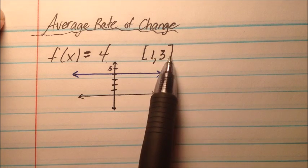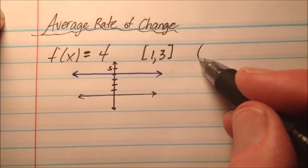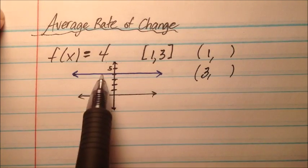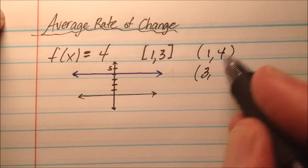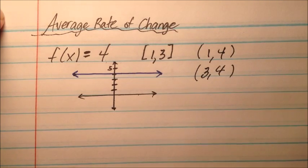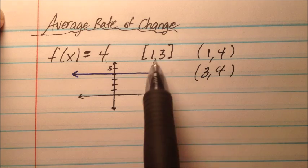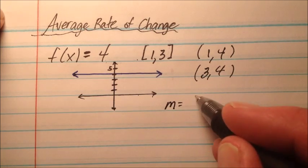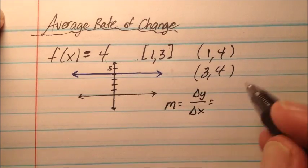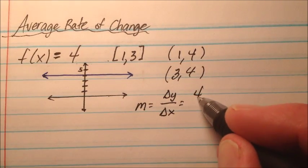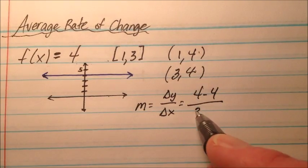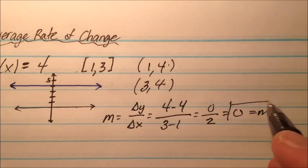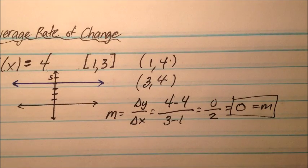So if we're talking about the interval from 1 to 3, we can make a couple of ordered pairs. At x equals 1, y is 4, and at x equals 3, y is also 4, because every y value is 4. So the average rate of change over this interval is simply the slope between these two points — change in y over change in x. So it's 4 minus 4 over 3 minus 1, which is 0 over 2, which equals 0. That's our average rate of change.